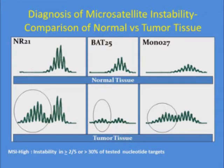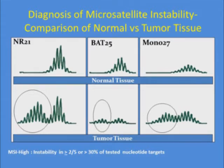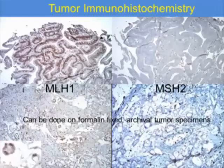There are approved panels used for MSI testing, and pathology departments often have their own panel. Microsatellite instability is characterized when two or more of the five nucleotide sequences are abnormal, or if using a larger panel, if greater than 30% of nucleotide targets are abnormal.